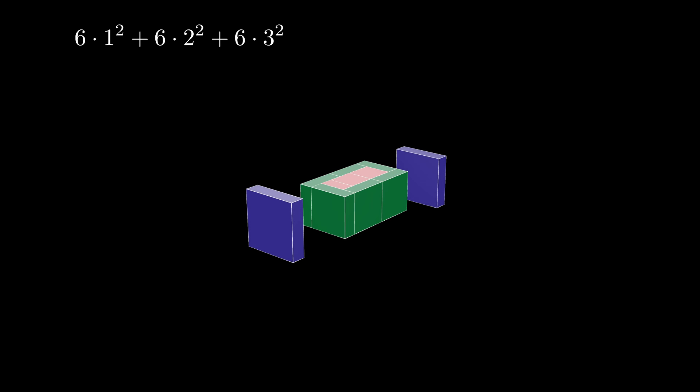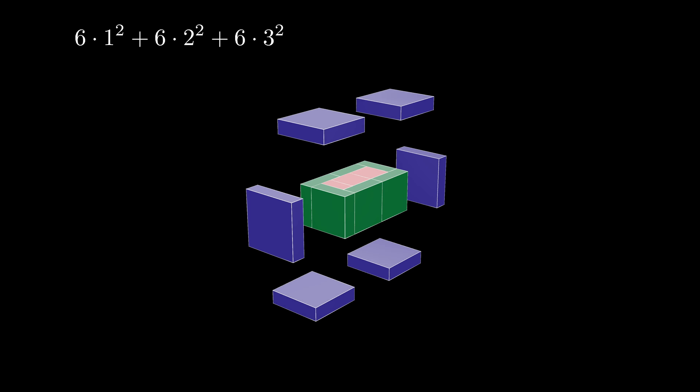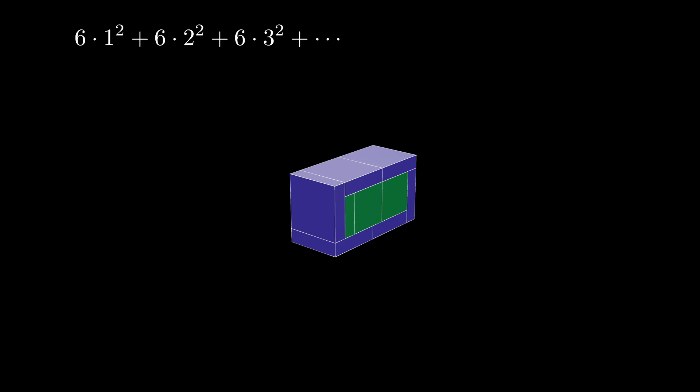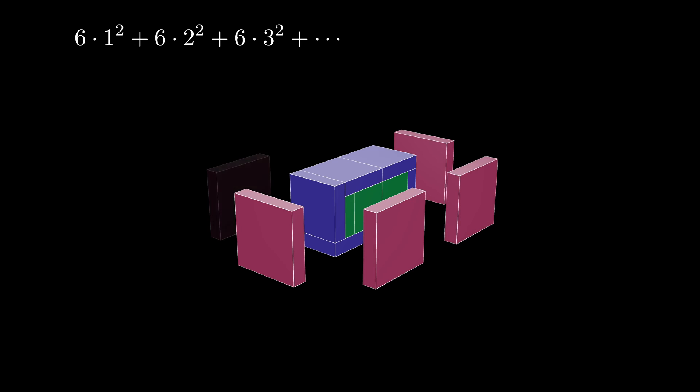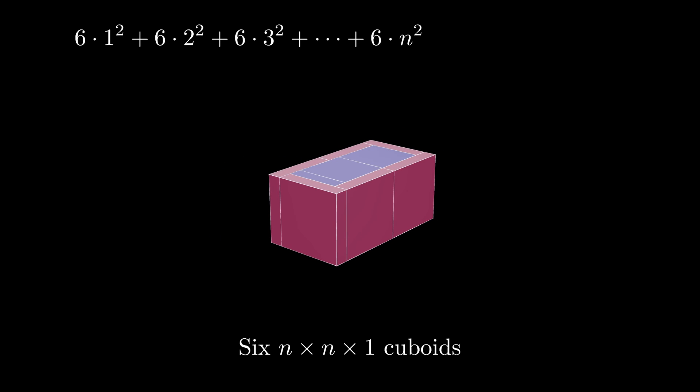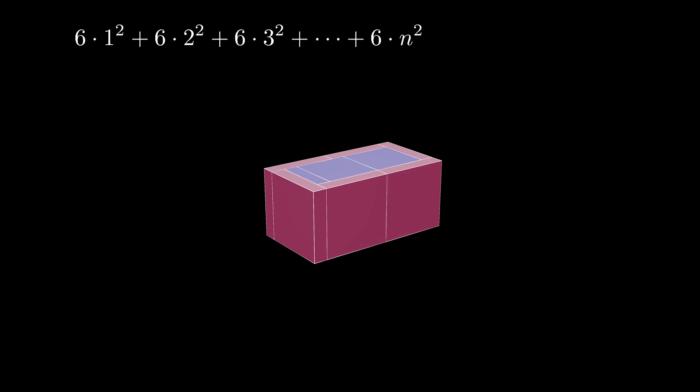We can continue this process as long as we want. At each step, we add 6 copies of a k by k by 1 cuboid, alternating between putting 2 on top and 2 on bottom, and 2 on the left and 2 on the right. When we finally stop, our last stage consists of adding 6 copies of an n by n by 1 cuboid. Each of these cuboids contains a volume of n squared times 1, so the final shell shown here encloses a volume of 6 times n squared.